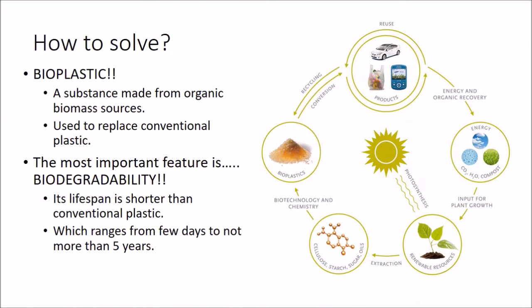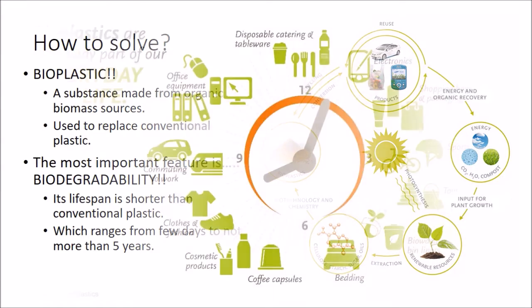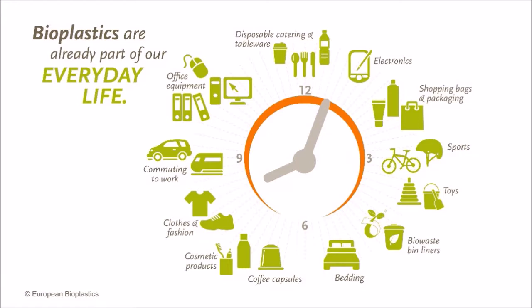Scientists have also found a solution to solve this plastic waste: the production of bioplastic. Bioplastic is a substance made from organic biomass sources used to replace conventional plastic. The most important feature of bioplastic is its biodegradability. It has a lifespan which is much shorter than conventional plastic, ranging from 2 days to not more than 5 years. Bioplastic is already part of our daily life, being used in electronic products, sports, shopping bags, toys, bedding, coffee capsules, cosmetic products, and many more.